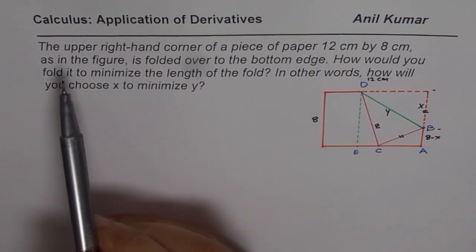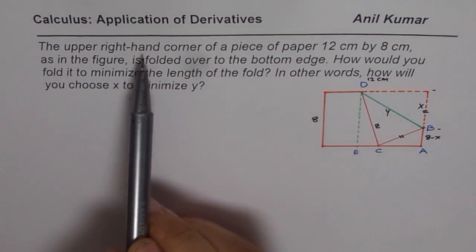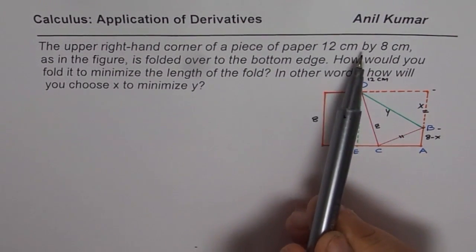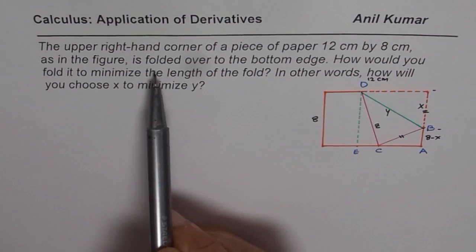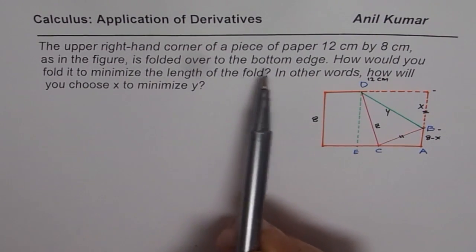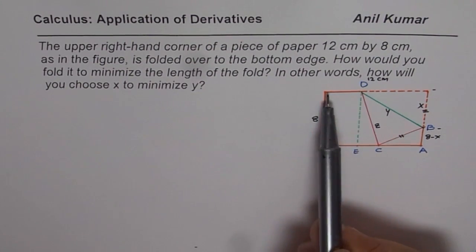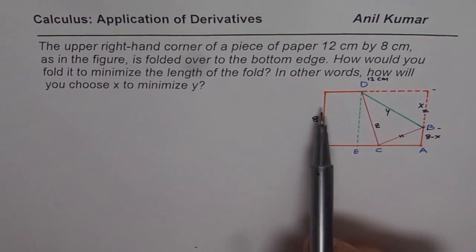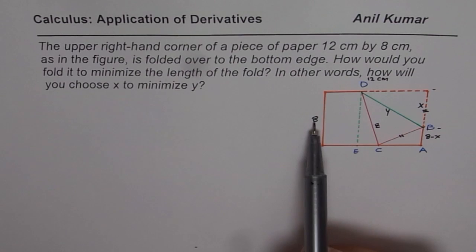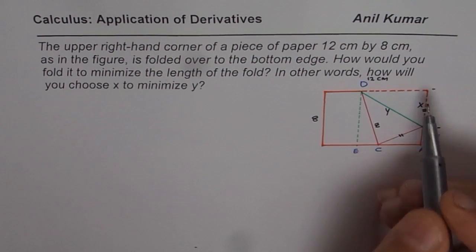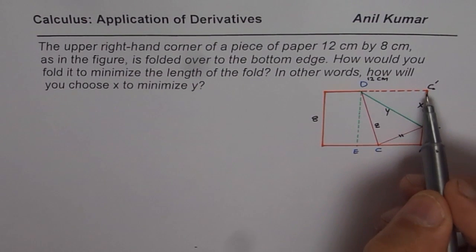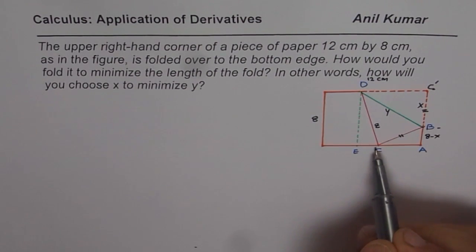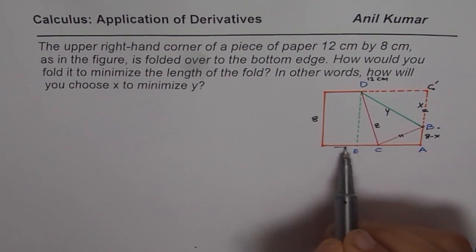The question here is: the upper right hand corner of a piece of paper 12 cm by 8 cm, as in the figure, is folded over to the bottom edge. Let's look into this figure. Here is the figure — a 12 cm by 8 cm paper. This particular right hand corner, let me call this as C', has been folded over to that portion which is on the bottom of the edge.